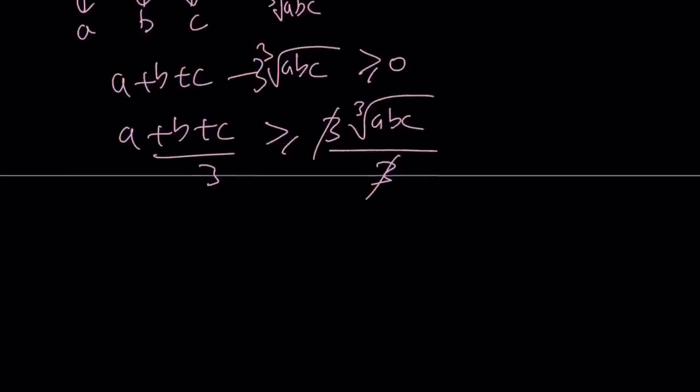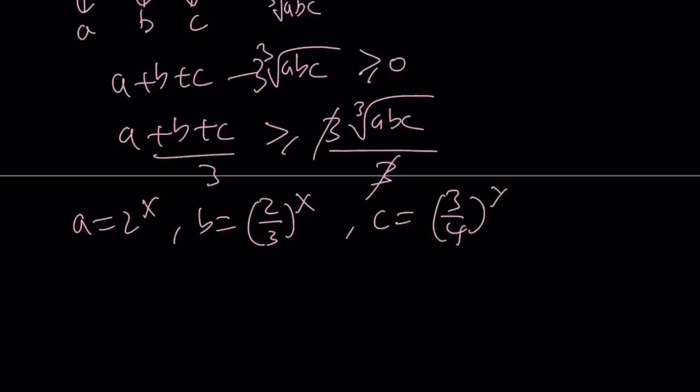So AM-GM inequality works like this, and let's see how we can apply it to our situation. Remember, we had a equals 2 to the x, b equals 2 thirds to the x, and c equals 3 fourths to the power x. We know that a, b, c are all positive. Therefore, we're going to consider the AM-GM for a, b, c.